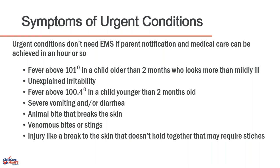Urgent conditions include: fever above 101°F in a child older than two months who looks more than mildly ill, fever above 100.4°F in a child younger than two months, unexplained irritability, severe vomiting and/or diarrhea, animal bites that break the skin, venomous bites or stings, and injuries that may require stitches. In areas where venomous bites pose severe risk, that requires an actual 9-1-1 call.